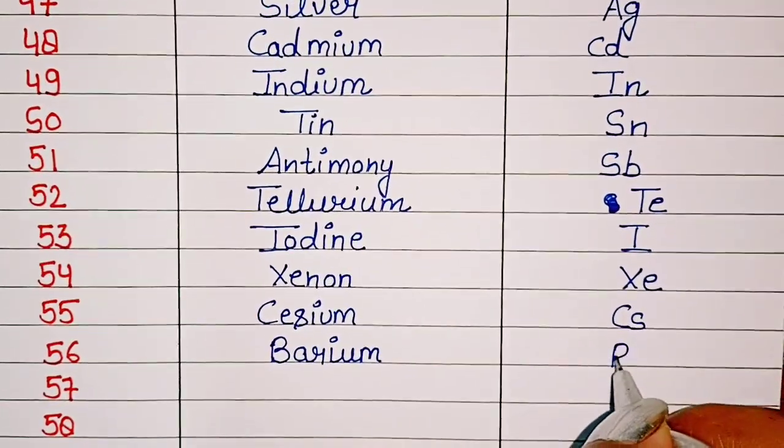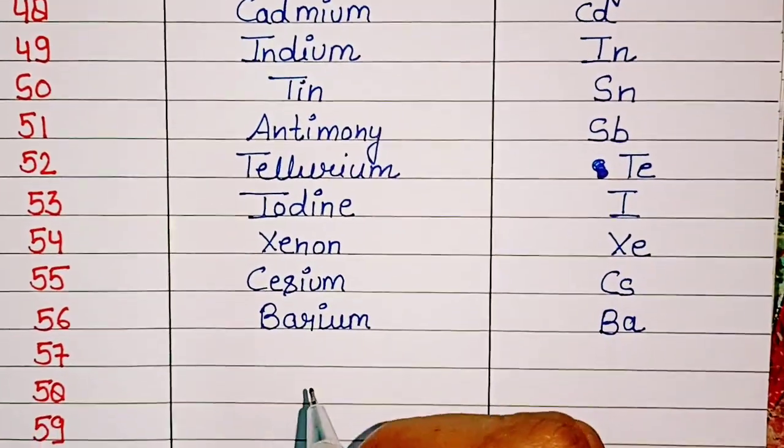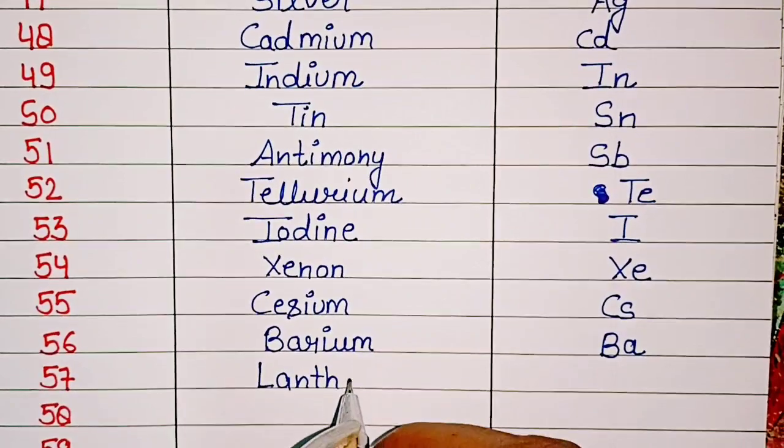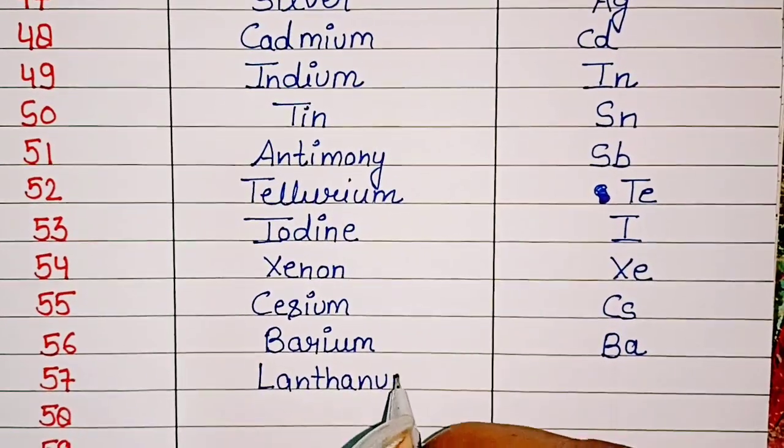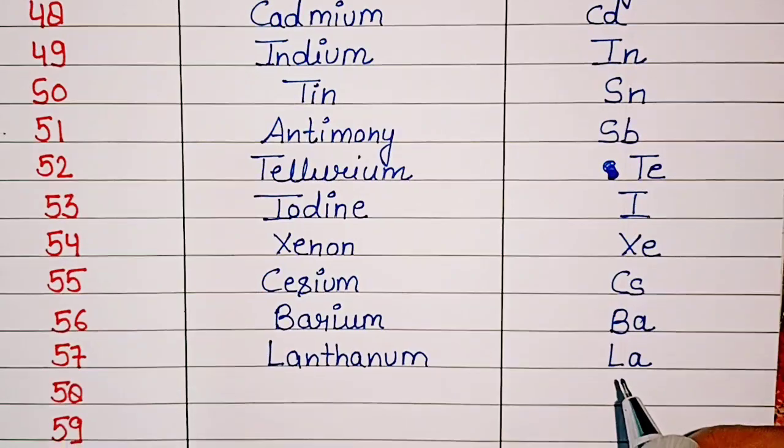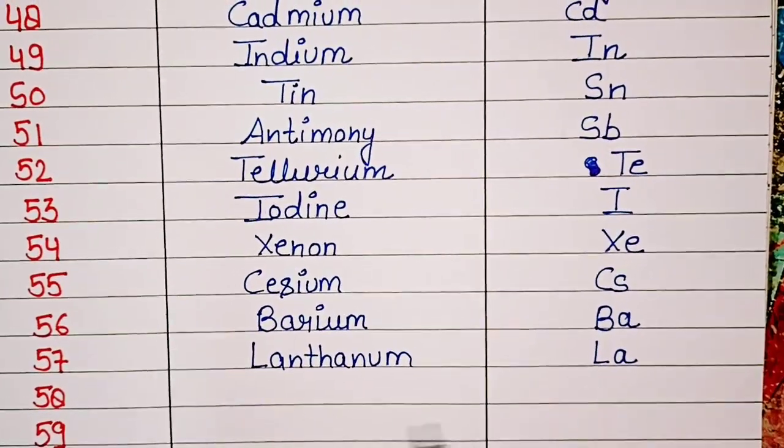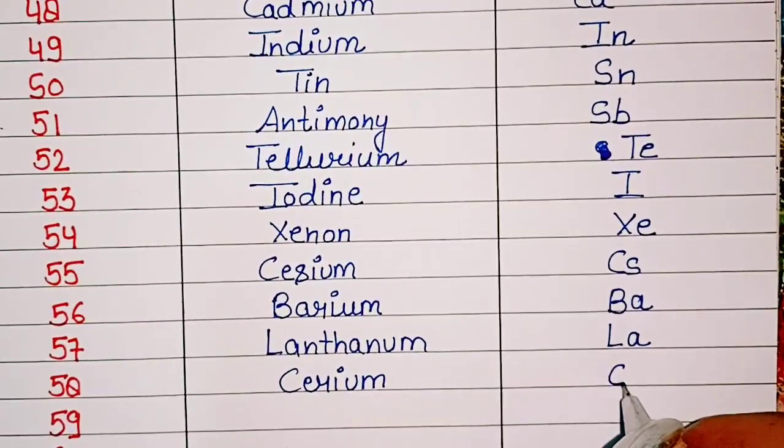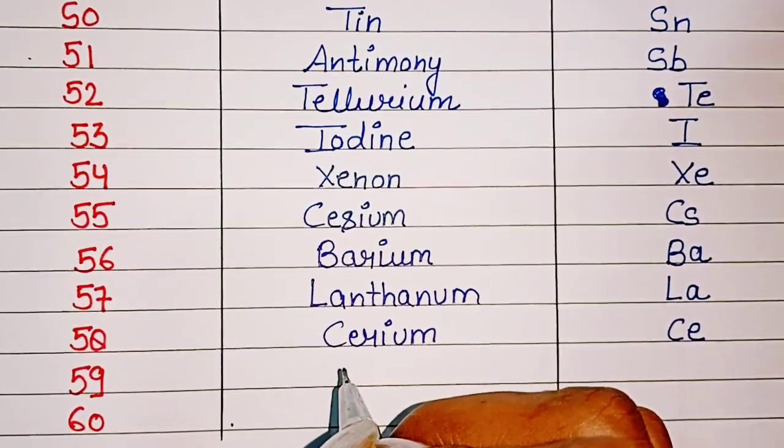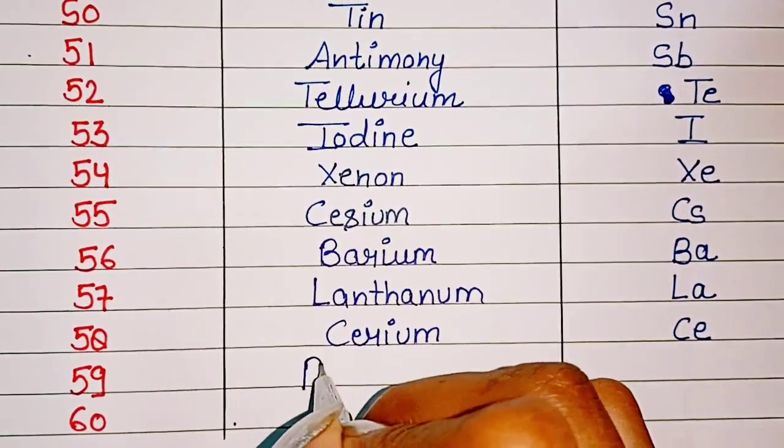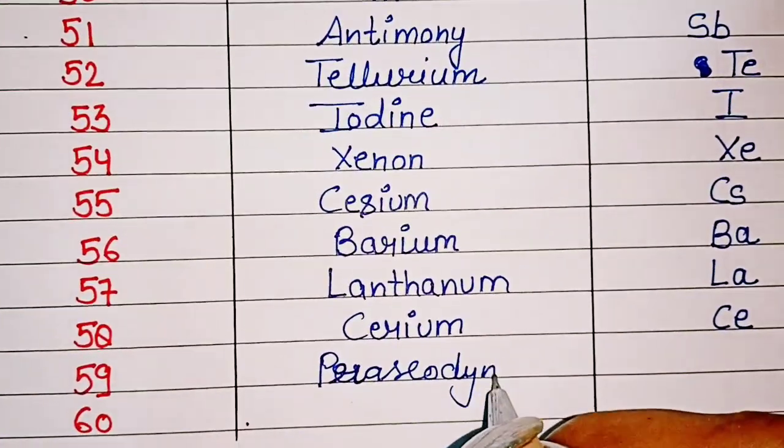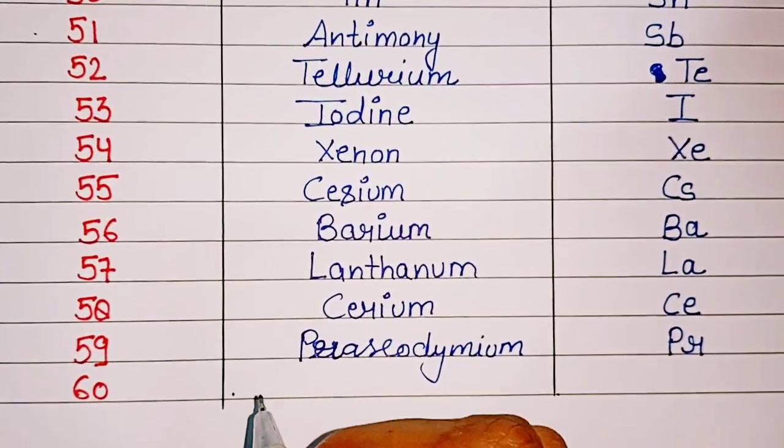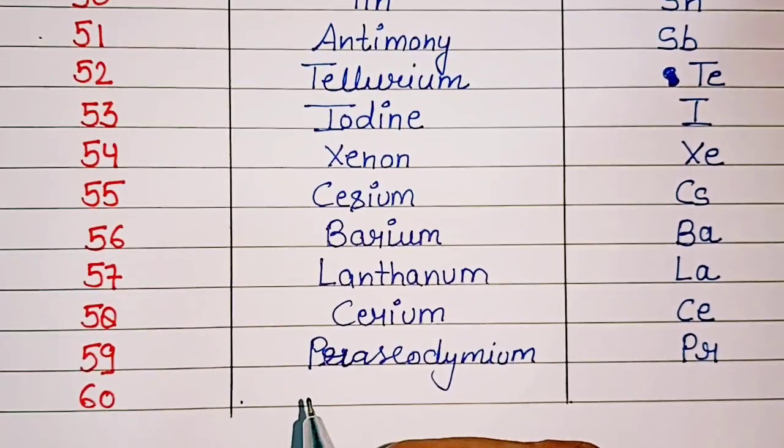56, Barium, symbol Ba. 57, Lanthanum, symbol La. 58, Cerium, symbol Ce. 59, Praseodymium, symbol Pr. 60, Neodymium, symbol Nd.